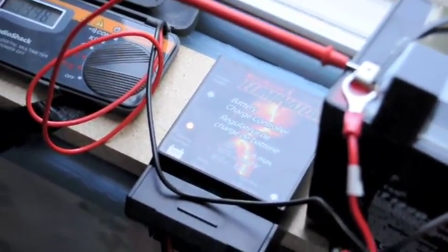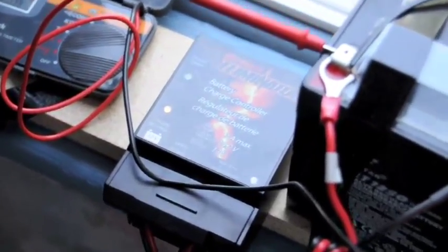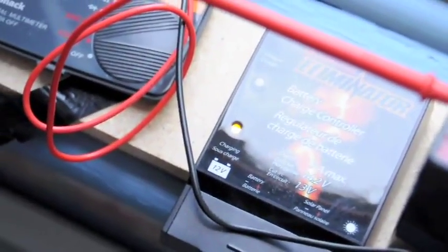So I actually have this wired into my charge controller to trick it into thinking that I have 16 volts worth of solar panels plugged into it. And you can see that it is charging. The light is lit up there.